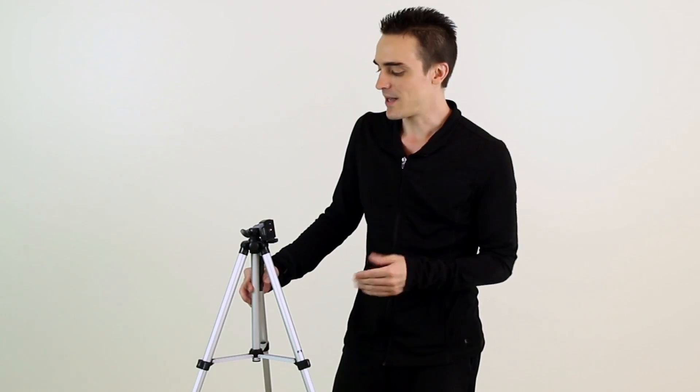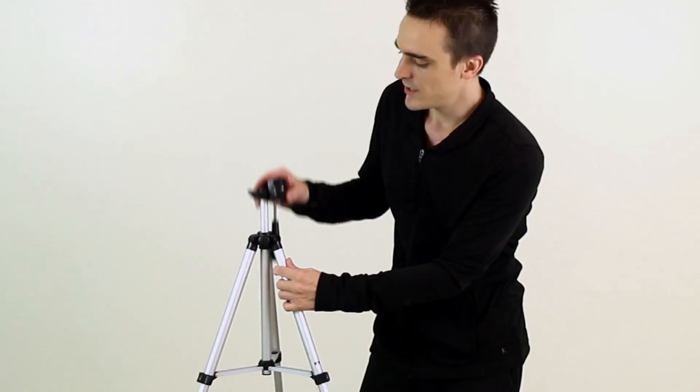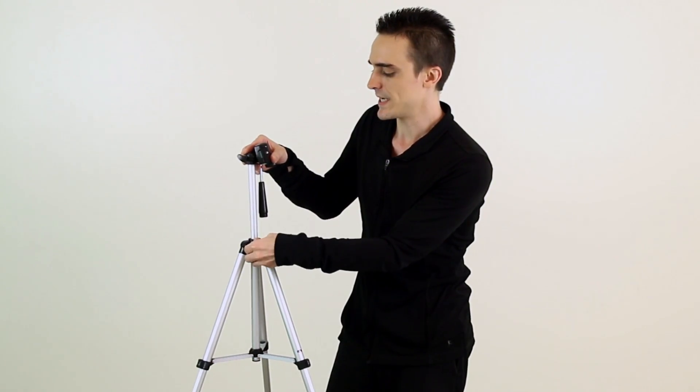Once you've got the legs extended and locked into place, there's a knob right here that you can undo and raise the mounting panel up a bit with. Once you've done that, go ahead and re-tighten it back.